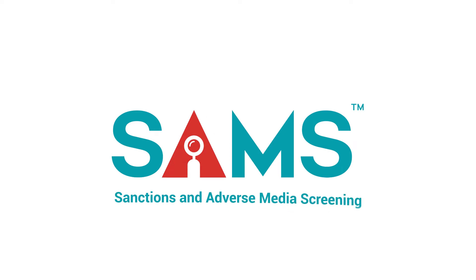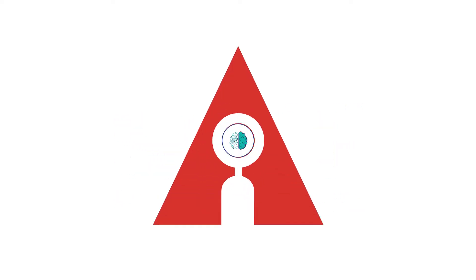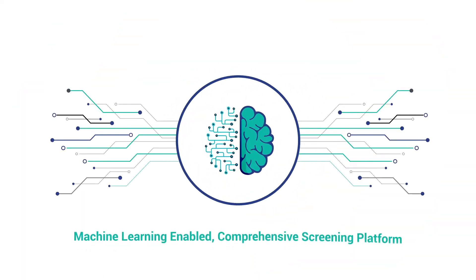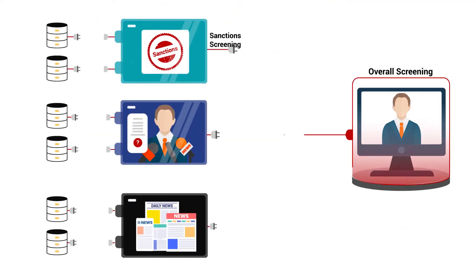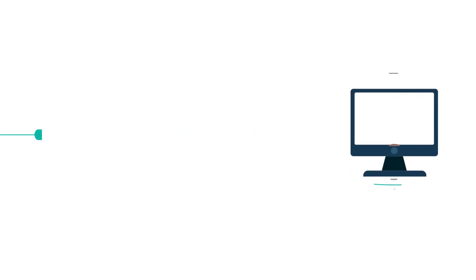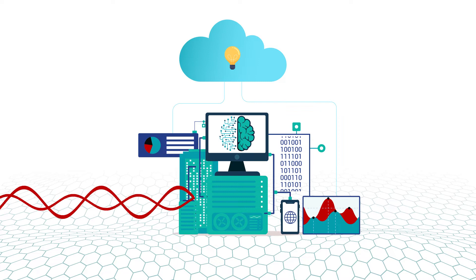SAMS, or Sanctions and Adverse Media Screening, is a machine learning-enabled comprehensive screening platform that allows you to take care of your firm's sanctions, PEP, and adverse media screening requirements through a singular, integrated platform.